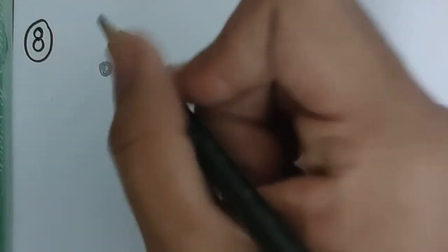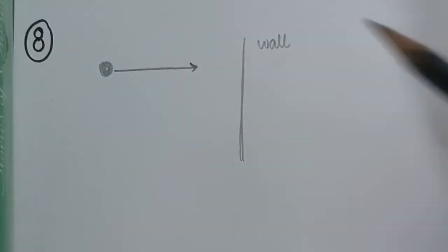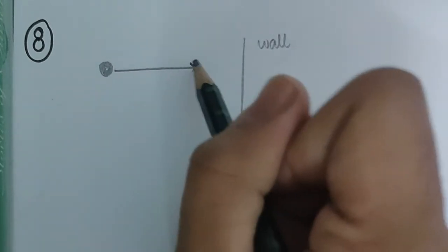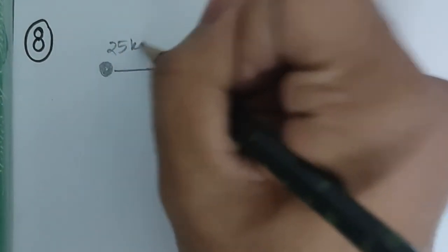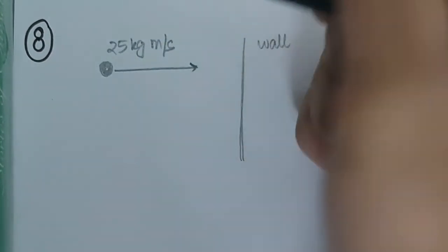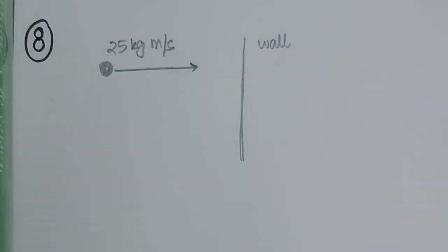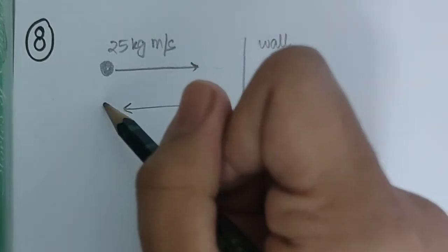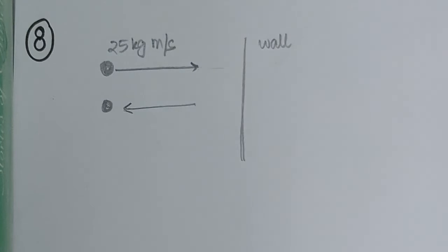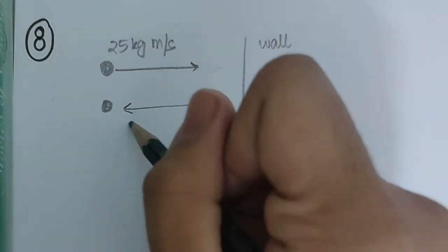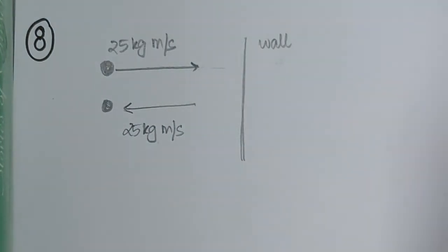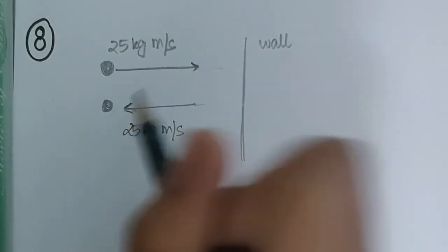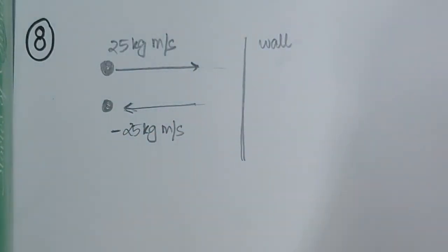Question 8: a ball moving toward a wall has a momentum of 25 kg·m/s. The ball bounces back elastically, so the speed magnitude remains the same. However, since momentum is a vector and direction has reversed, the momentum after the collision is minus 25 kg·m/s.